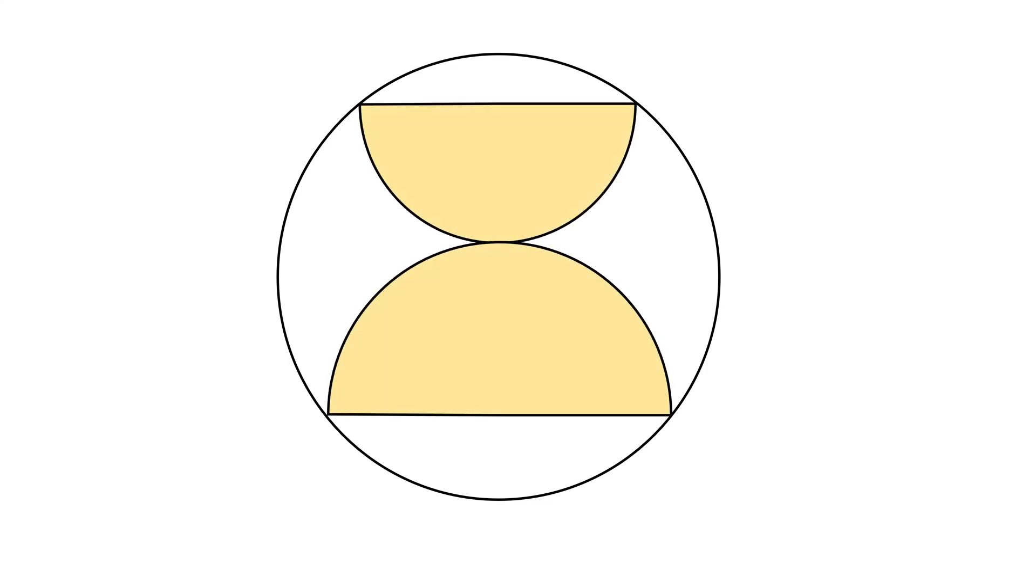Hi, we have a circle here. Two semicircles have been placed inside the circle in a way that the diameters of the semicircles are chords to the circle and these two semicircles are tangent to each other at this point. If the area of the circle is 1 square unit, what's the area of the shaded regions?